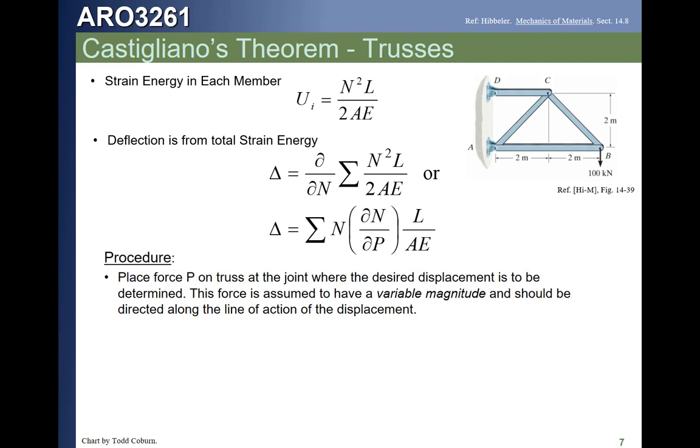However, you need to resist the urge to plug in this 100 kN force, solve for all the forces, and leave them as numbers. Because you're going to need to be able to see all of the influences of that 100 kN force. So, you're going to need to place a P on the structure at the point and in the direction where you want the deflection. And then solve for all the forces with respect to that force, leaving that force as a variable. Apply Castigliano's theorem. And only after you've done that can you go and plug in the value of the force.